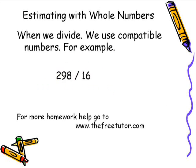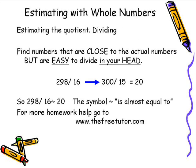We also use compatible numbers when we divide. For example, 298 divided by 16 — we change this to 300 divided by 15, and the actual number is pretty close to 20. This has been another free homework help from TheFreeTutor.com. Please visit us for more homework help. Thanks.